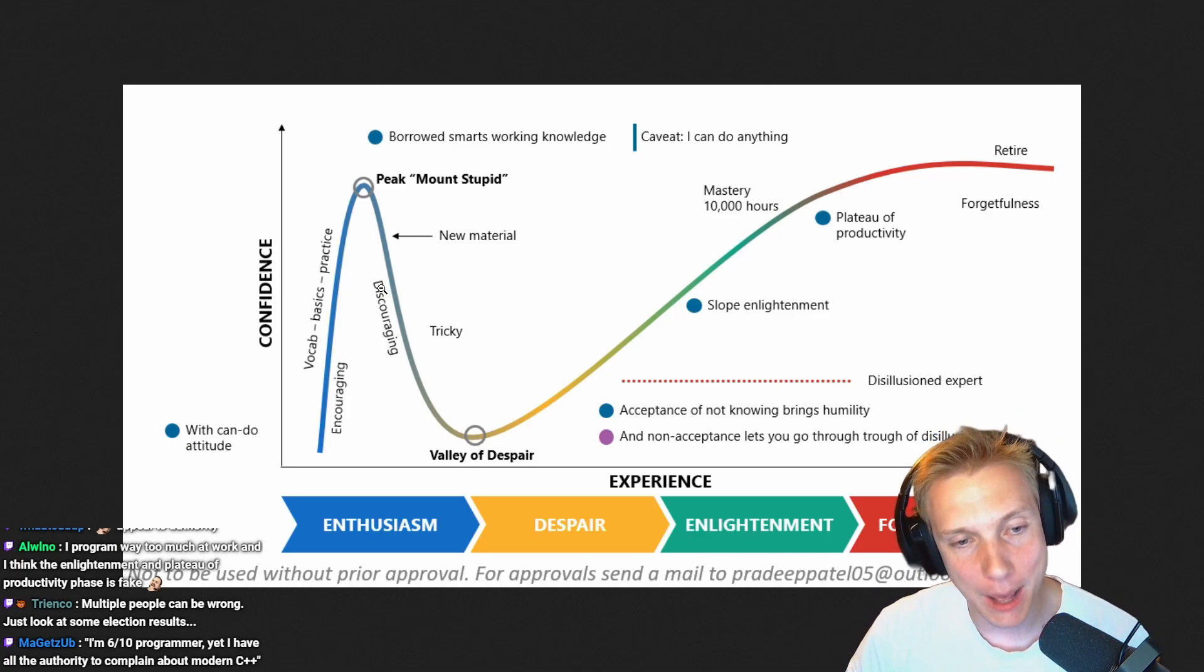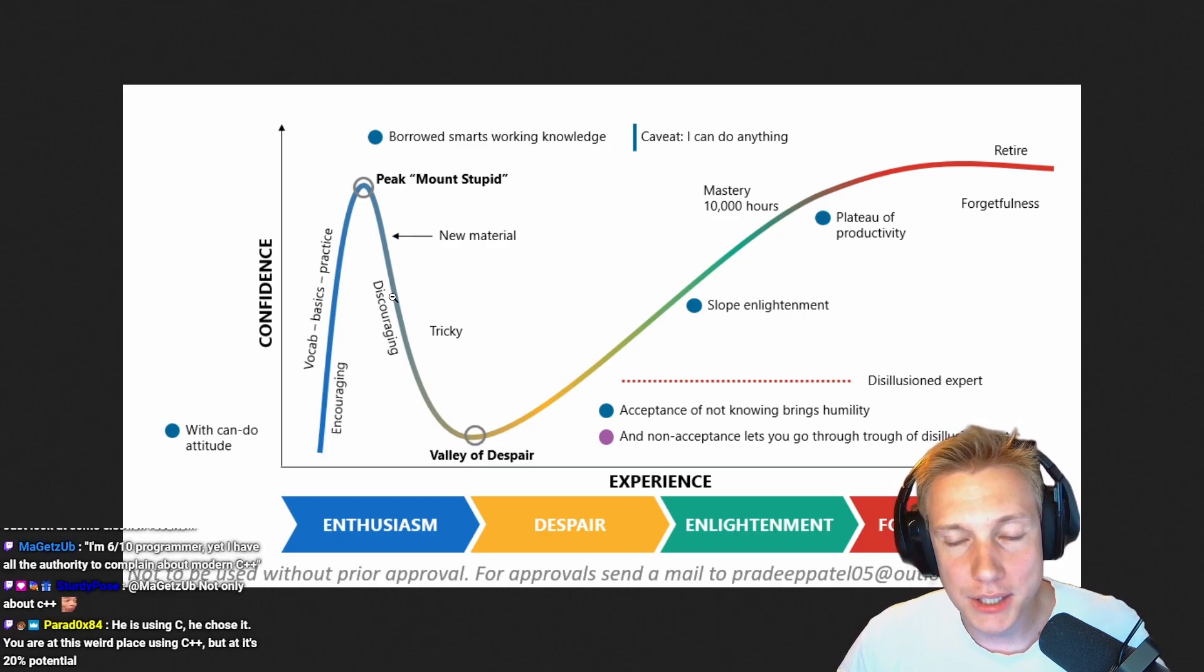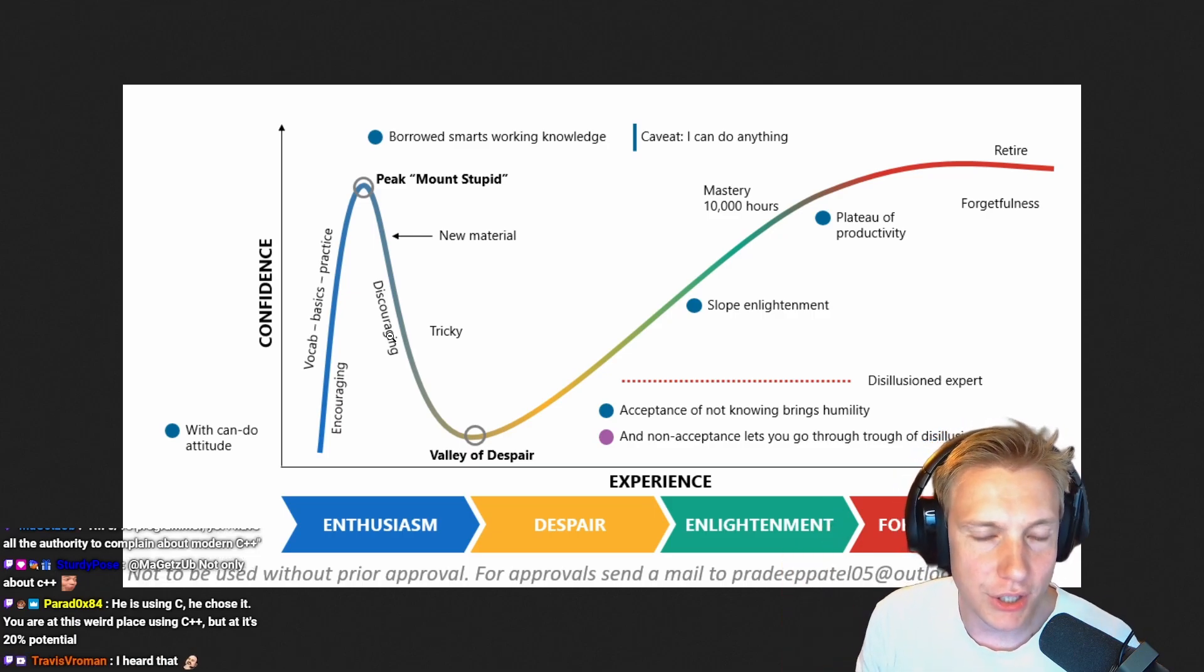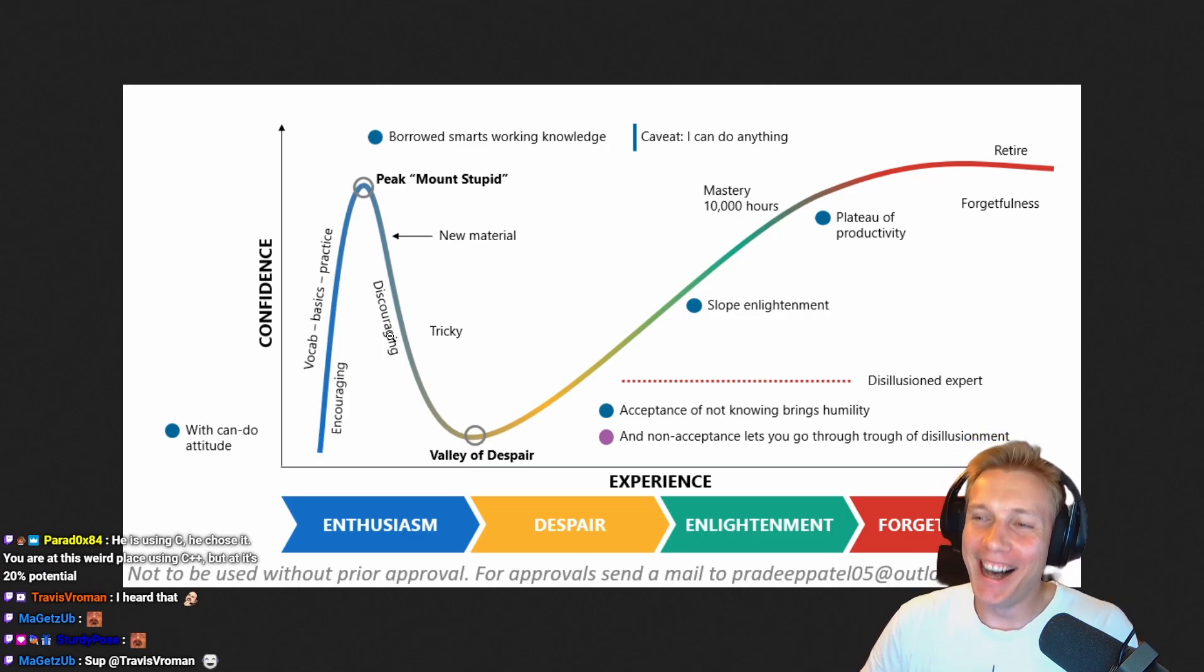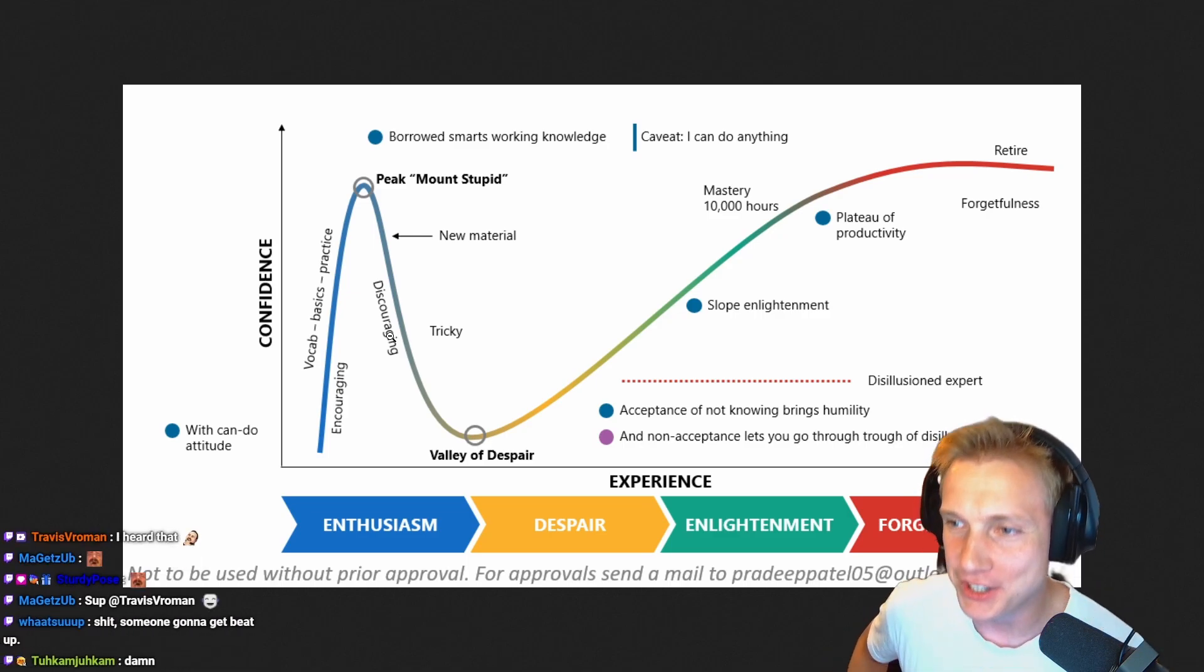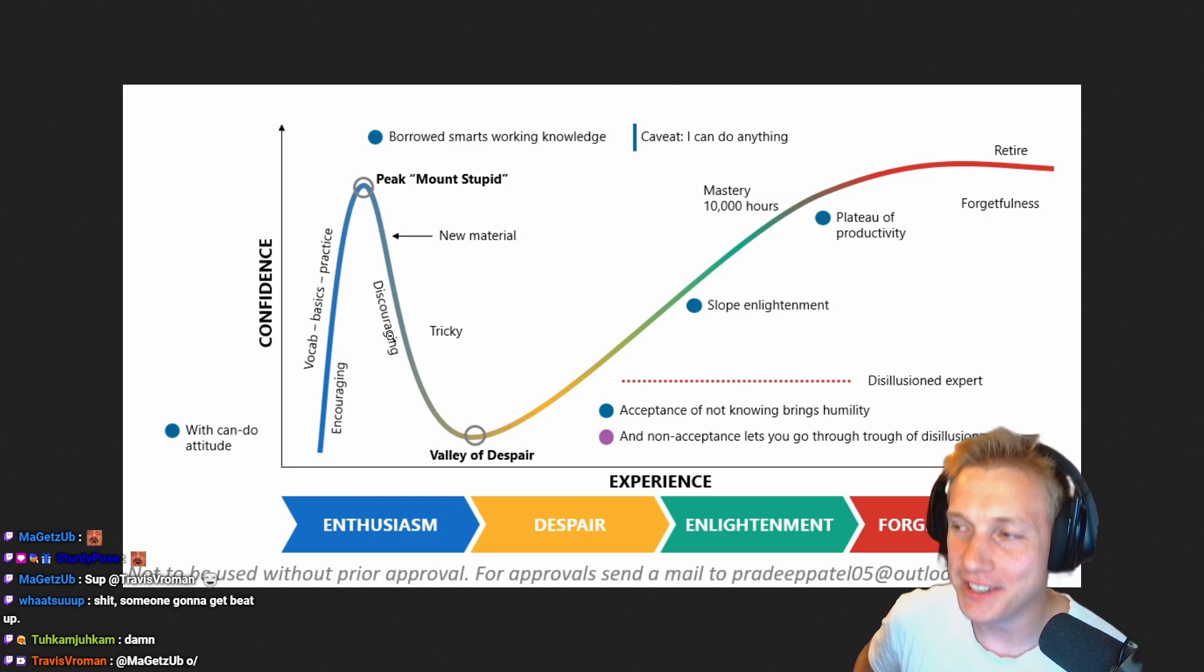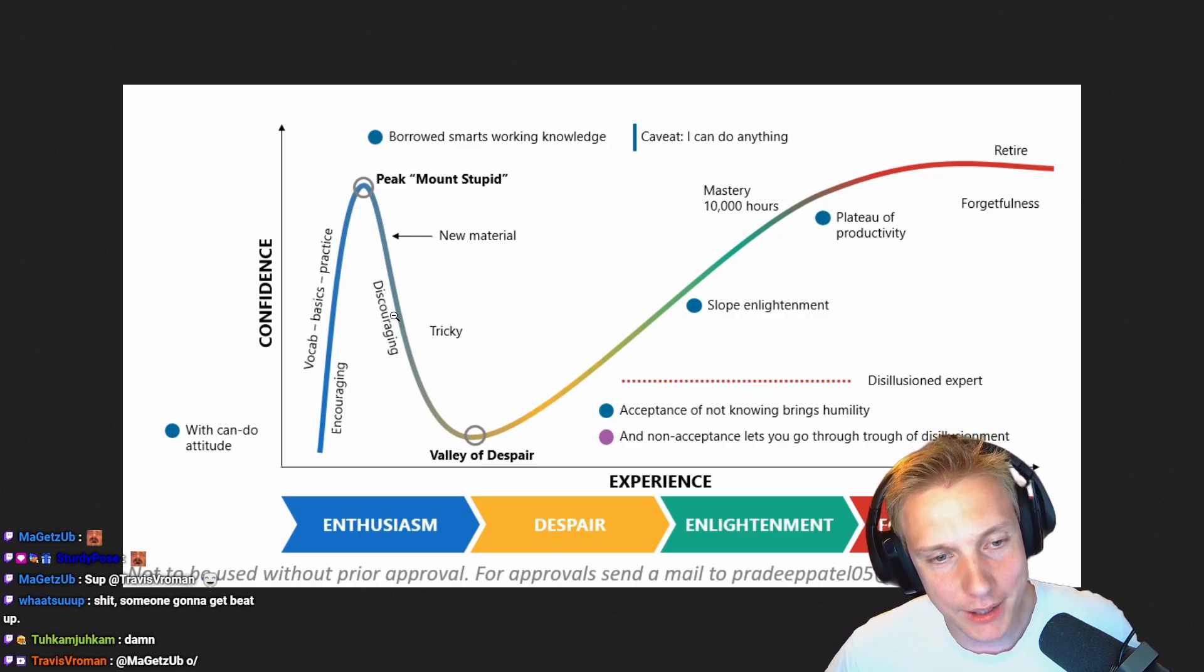So, what I think. Basically, this is what happens. I think this new material here is one year, one and a couple of months in to learning C++ and game development in C++. And then Valley of Despair. This is when I learned new game mechanics, new engine mechanics, sound, input, graphics, OpenGL transition, hot reloading in C++. You are at this weird place using C++, but it's 20% potential. Okay, bro. Yeah. I see. Faster doesn't mean better, you know. Faster in the beginning doesn't mean better.